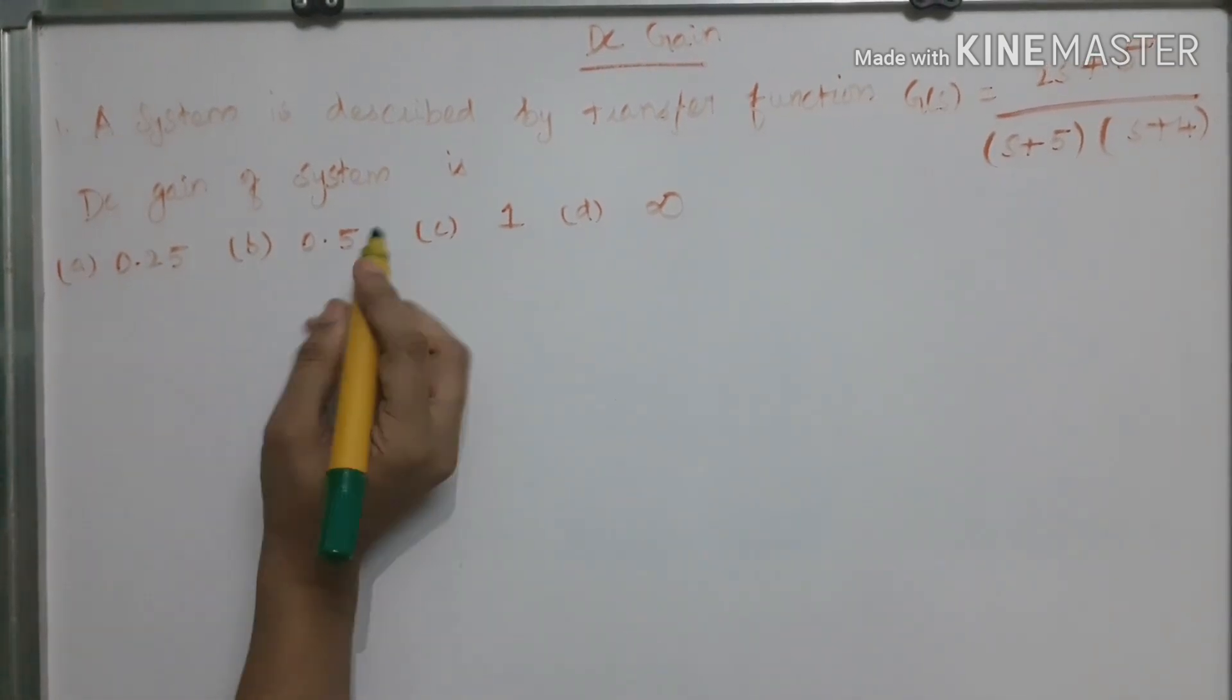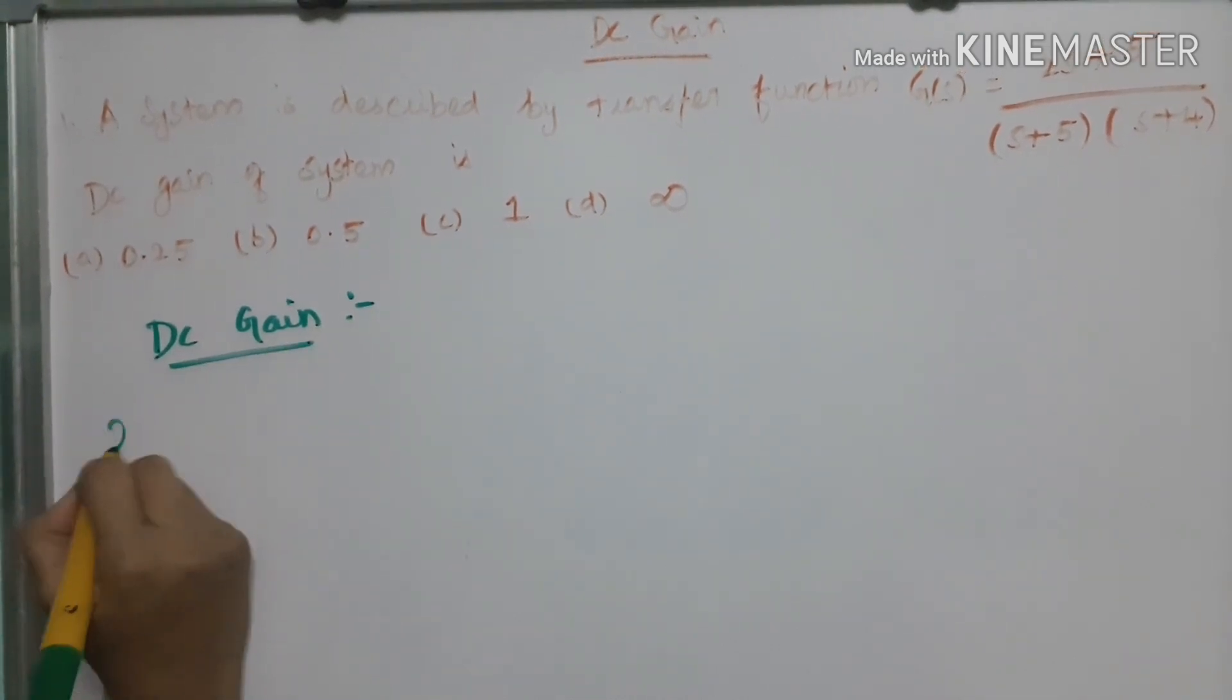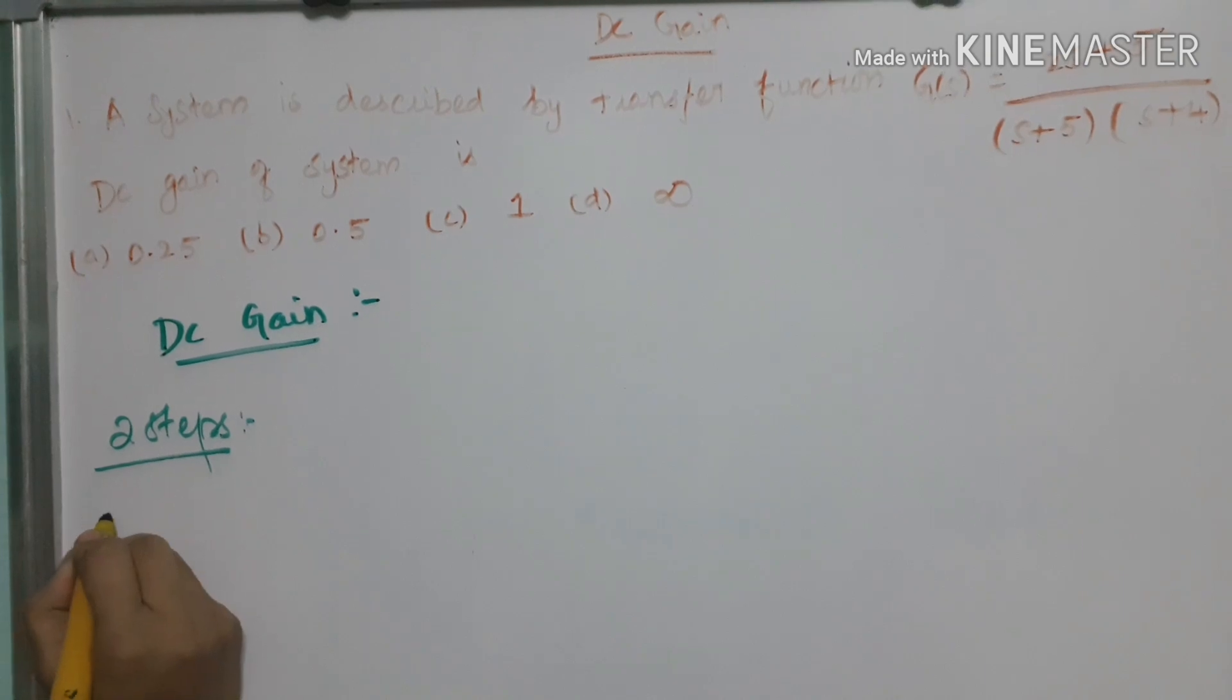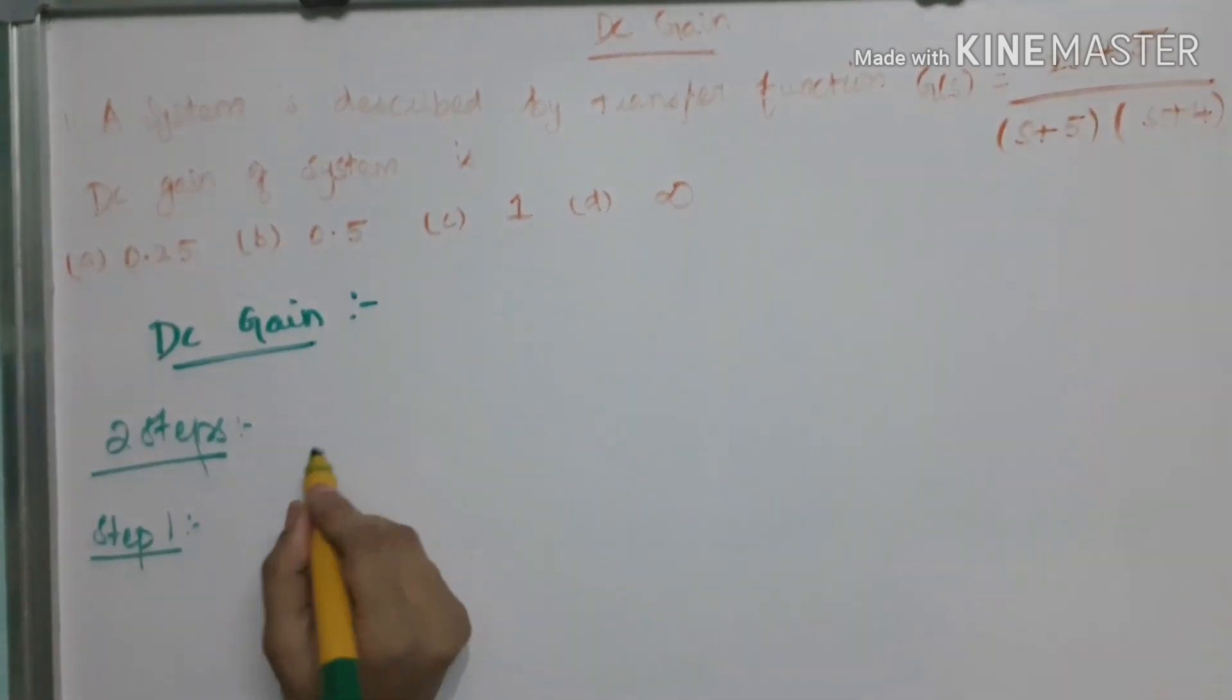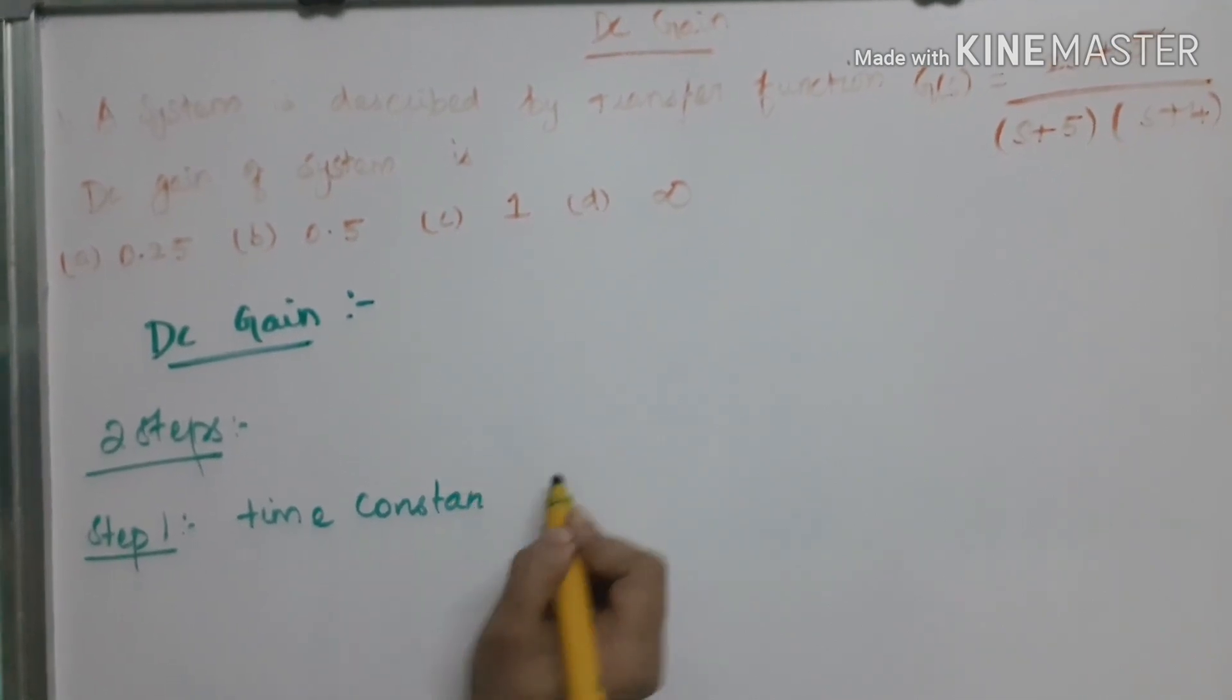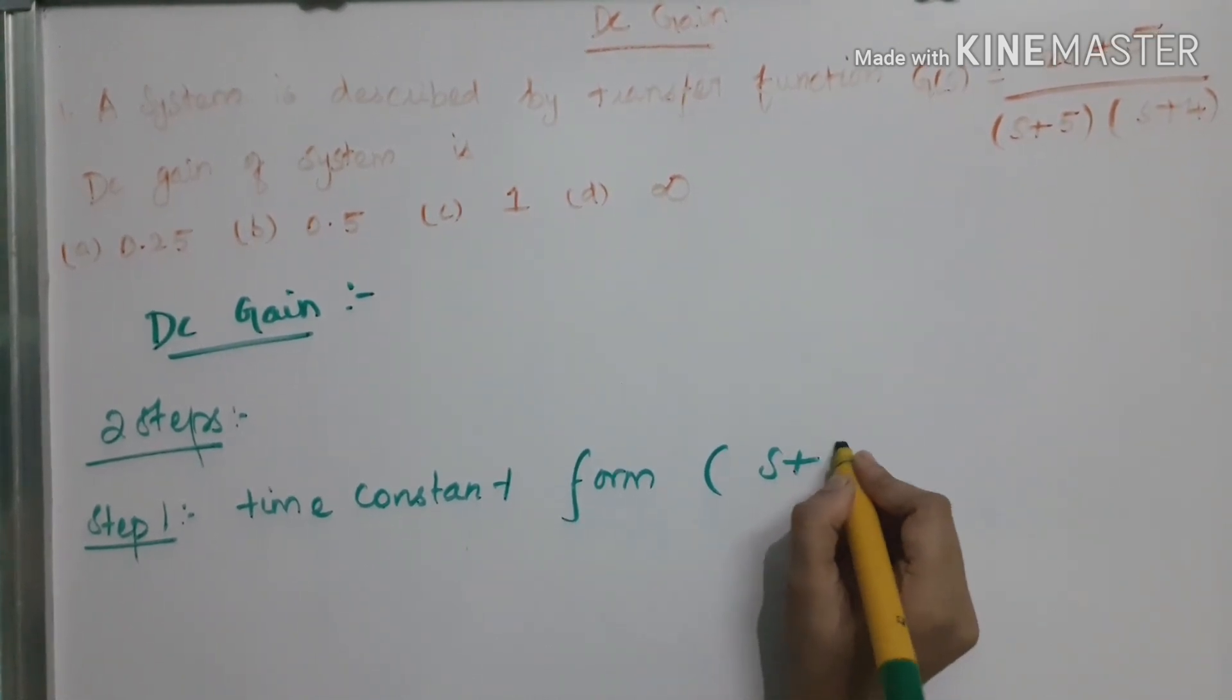In order to find DC gain, mainly we are having two steps. Step 1, we have to convert this transfer function into time constant form. Time constant form is nothing but it is in the form of s plus 1.